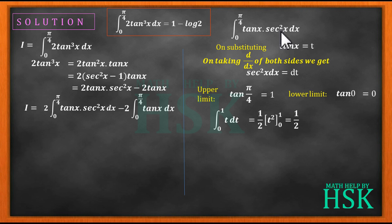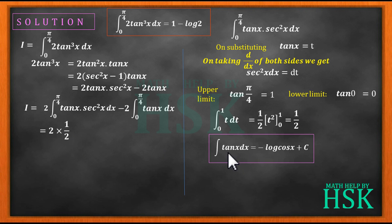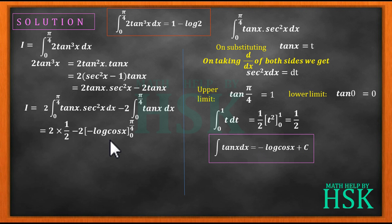Placing this value, the first term becomes 2 × 1/2 = 1. For the second term, we know that the integration of tan x equals -log(cos x). So integrating directly, I write it as -2 times the integration of tan x, which equals -log(cos x), evaluated from the limit 0 to π/4.